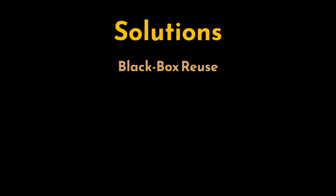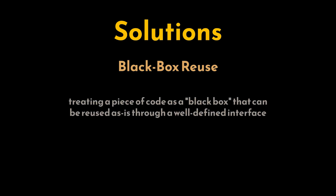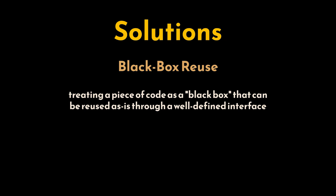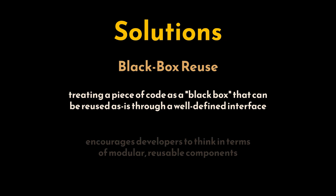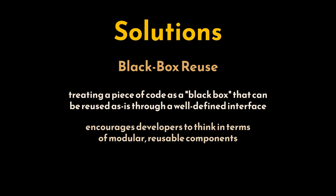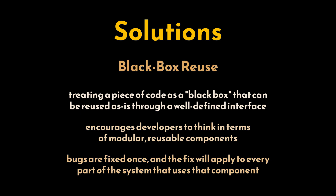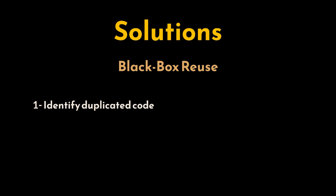The solution to this problem lies in refactoring the code base to focus on black box reuse. Black box reuse involves treating a piece of code as a black box that can be reused as-is through a well-defined interface, without needing to modify its internal workings. This approach encourages developers to think in terms of modular, reusable components that can be plugged into different parts of the system. Bugs can be fixed once, and the fix will apply to every part of the system using that component.